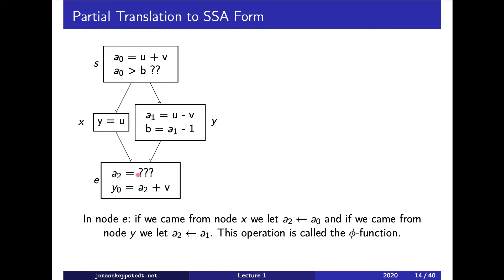But here we have a problem, namely that the path from the assignment to a1 and the assignment to a0, they join here. And the question is, which variable should we use then?